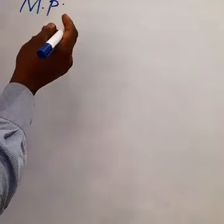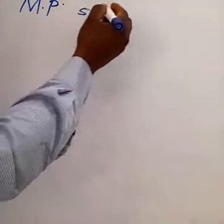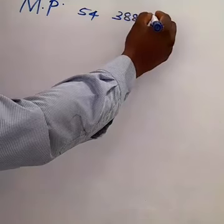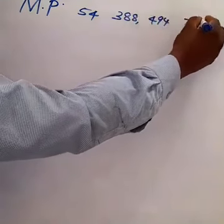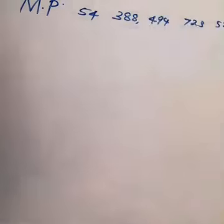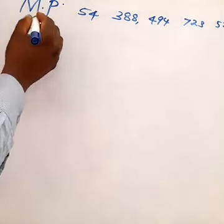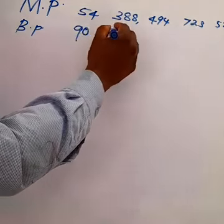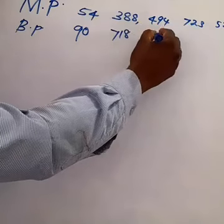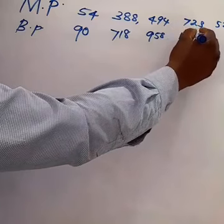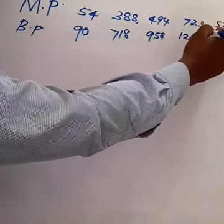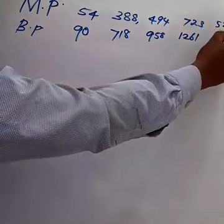Melting points in Kelvin: O=54, S=388, Se=494, Te=723, Po=527. Tellurium has the maximum melting point. Boiling points in Kelvin: O=90, S=718, Se=954, Te=1261, Po=1235.